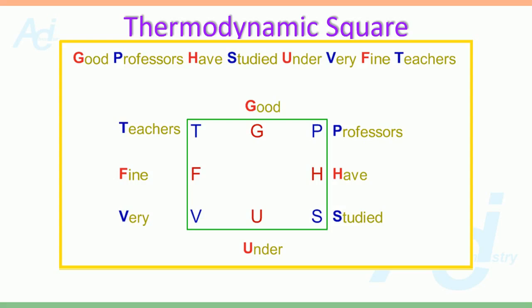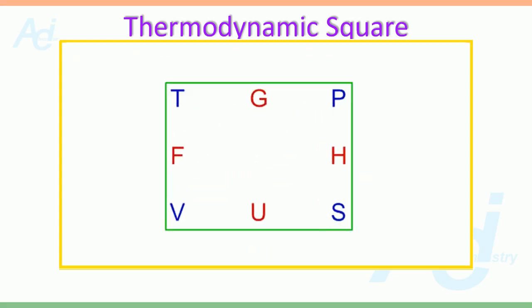Once again, read the mnemonic: 'Good professors have studied under very fine teachers.' The terms are arranged in the clockwise manner in this square. The variables are placed at the corners, like T, P, S, and V, whereas the other terms G, H, U, and F are the thermodynamic functions.